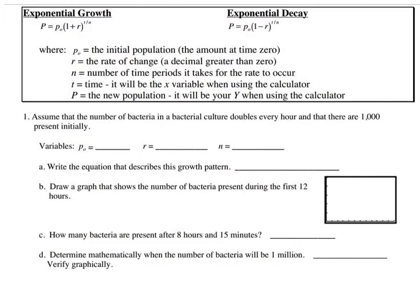Stu Schwartz gives us this exponential model. Remember, growth is when something — a population, money, or whatever — is increasing, and decay is when it's decreasing and goes down as time goes on, while growth increases as time goes on.